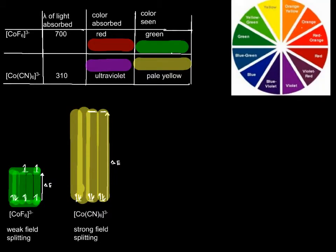Let's look at another example. In case of cobalt, if you look at cobalt 3+, it's argon, 4s is lost, 3d6.